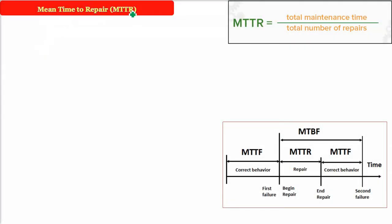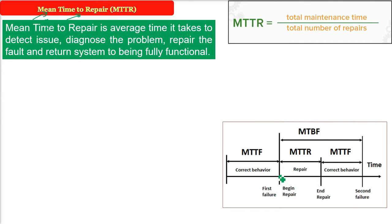MTTR means Mean Time To Repair — 'mean' refers to the average, so we take various values, add them, and divide by the number of counts. Time to repair is the time it takes to fix something after a failure has occurred. Once a failure happens, there is a repair time, and when the system starts behaving correctly again, that duration represents the mean time to repair.